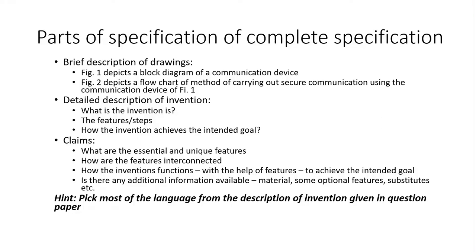You also take note of any additional information available — such as different materials that may be used for the features, optional features, or substitutes for essential features already defined. These are used for making dependent claims. I have already explained what are the different types of claims and how to go about drafting them in my earlier video, and I'll post a link so you can refer back to understand what other steps to take care of when drafting claims.